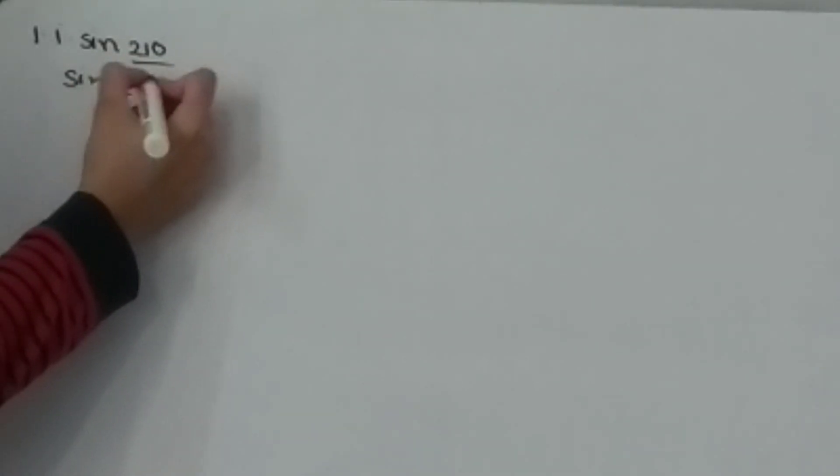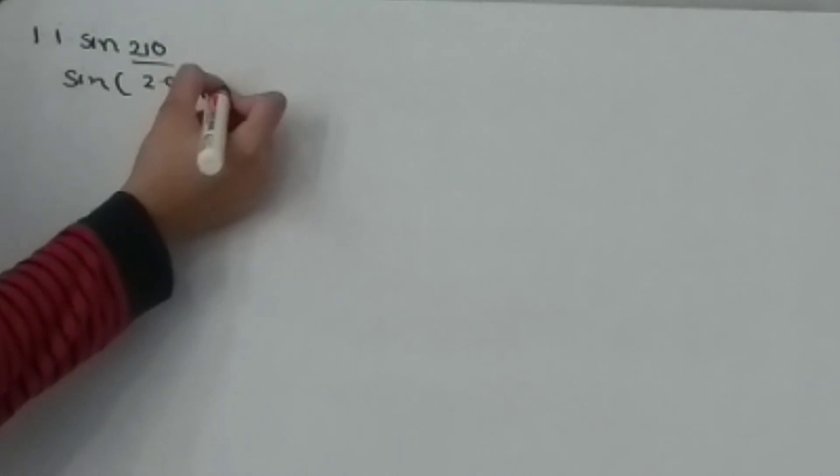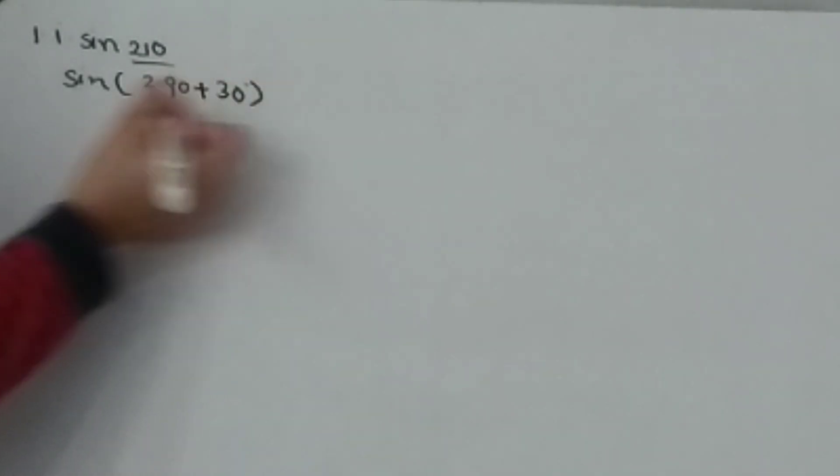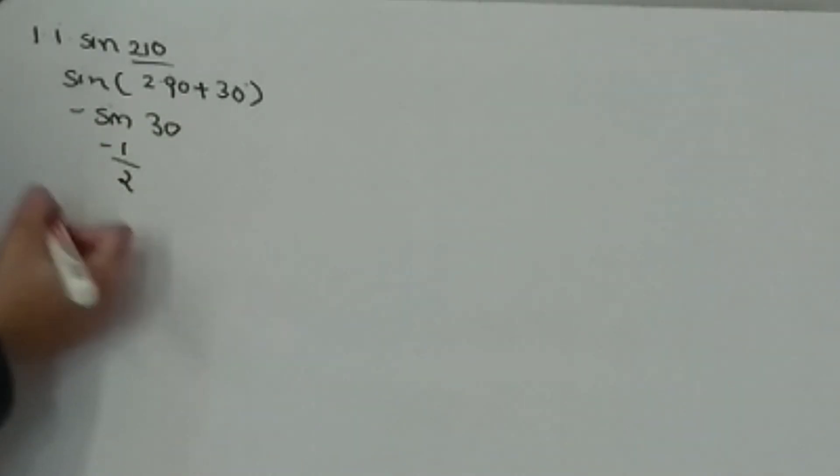First, we will discuss sin(210°). That is nothing but sin, which we split as 2×90° + 30°. Then it will become minus sin(30°), and the answer is 1/2.